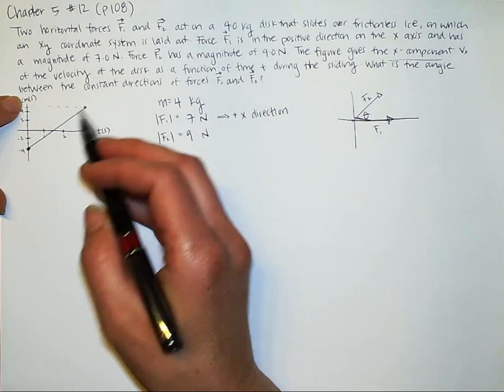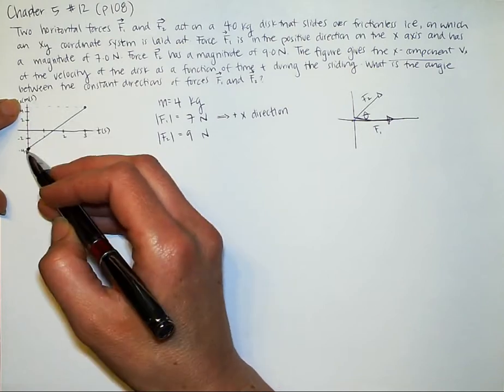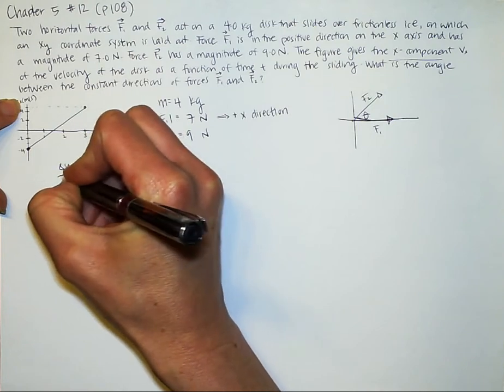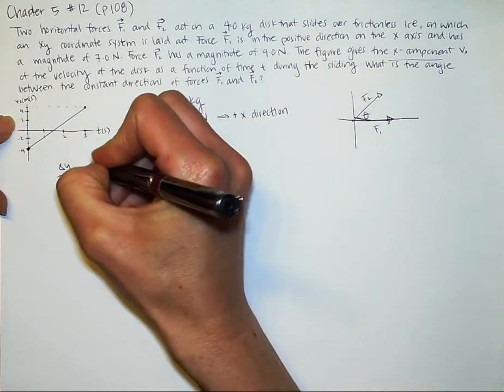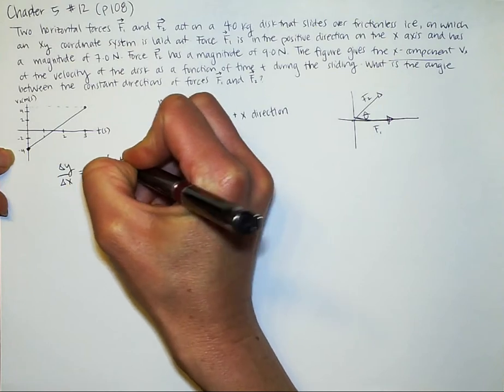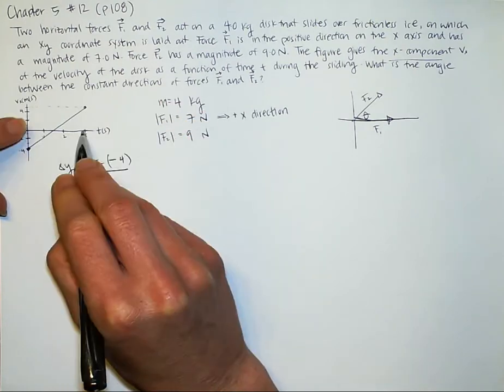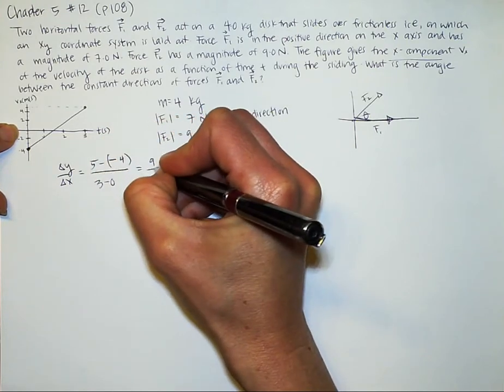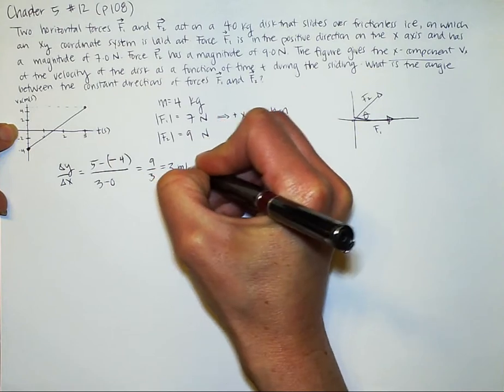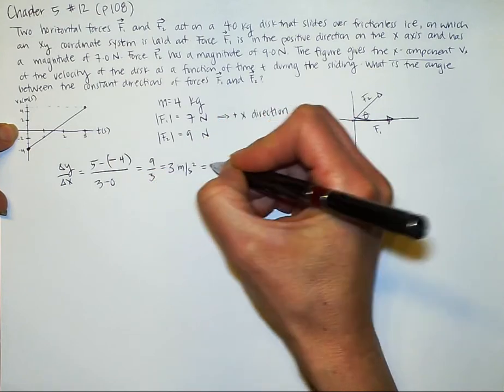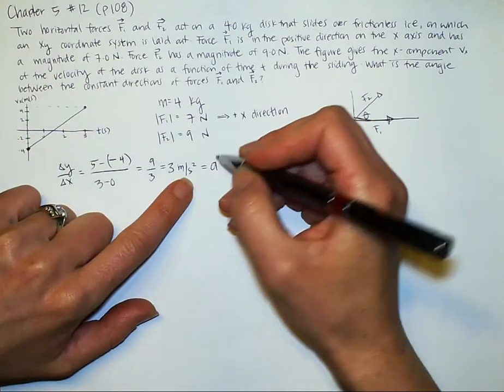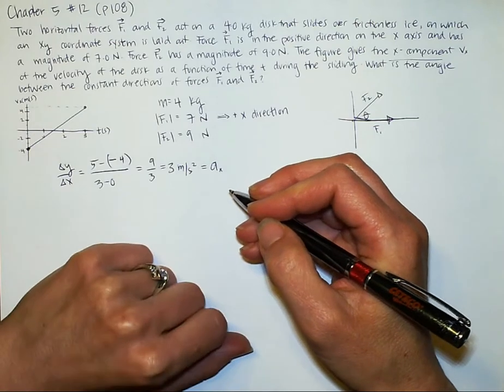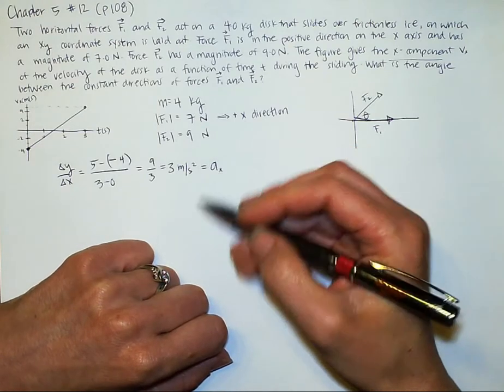This is up at 5 in the y, on the y-axis, and this is at negative 4. To get the slope, I'll just do change in y over change in x. So I'll have 5 minus negative 4 over 3 minus 0. So I'll have 9 over 3 equals 3 meters per second squared. And remember, this is not the entirety of my acceleration. This is just the acceleration in the x direction, because that's the velocity in the x direction.